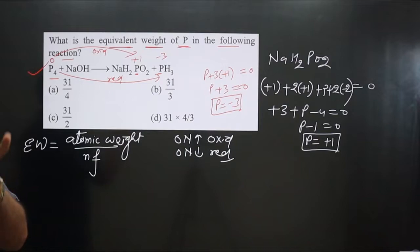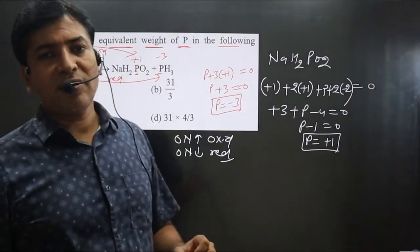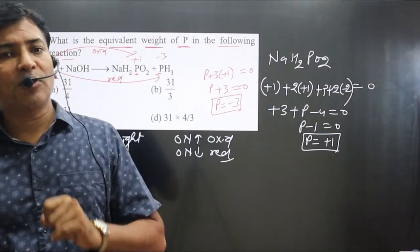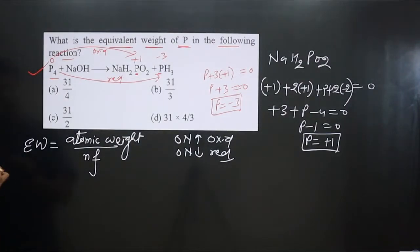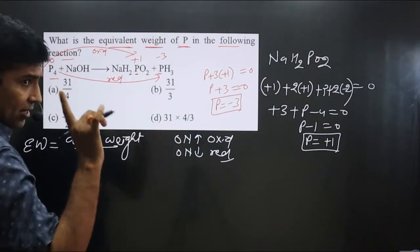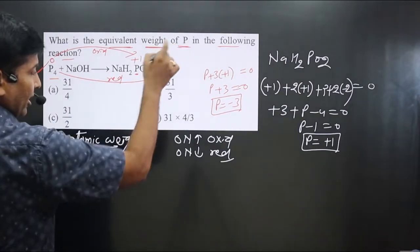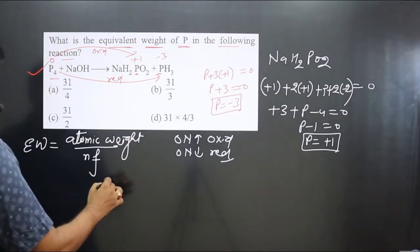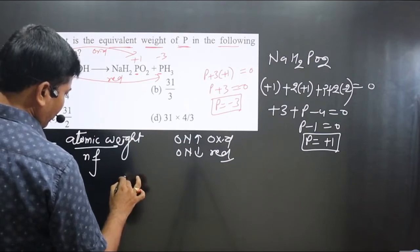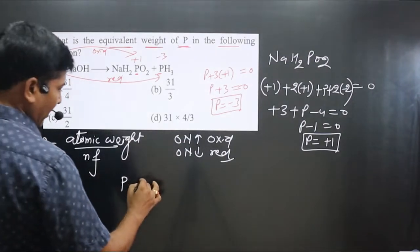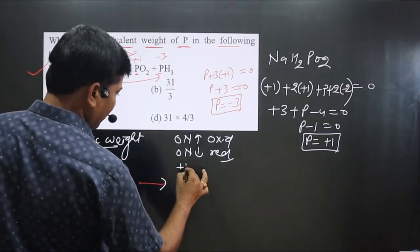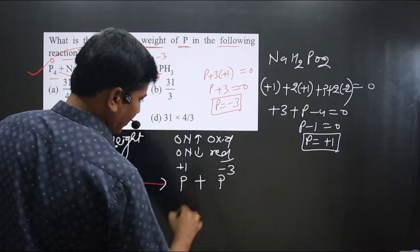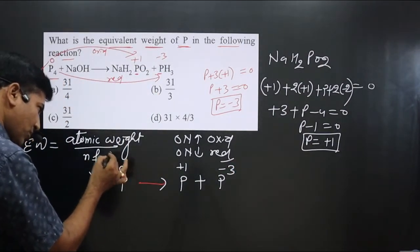Since the same molecule undergoes both oxidation and reduction, this is an example of a disproportionation redox reaction. To calculate the n-factor in a disproportionation redox reaction, we use a different approach. For single element phosphorus on the left, it gives phosphorus at +1 on one side and phosphorus at −3 on the other.